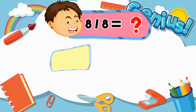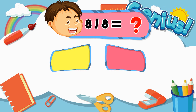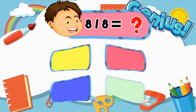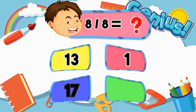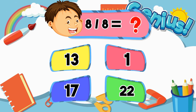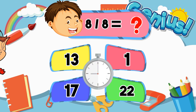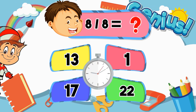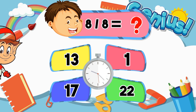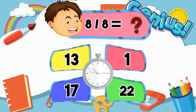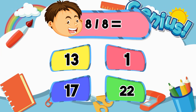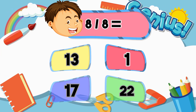What is 8 divided by 8? Thirteen. One. Seventeen. Twenty-two. Correct answer: 1.